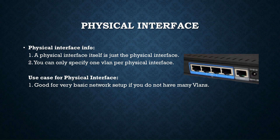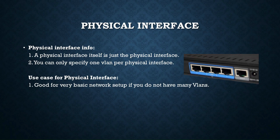That can be limited because, in my example with this picture, I have my WAN port right here and I have four other individual ports. Let's say I had five VLANs — I couldn't do that because I can only specify one VLAN per port. That's where we are going to talk about subinterfaces and why they are very good. Physical interfaces are very good for basic network setups and if you don't have too many VLANs in your environment.